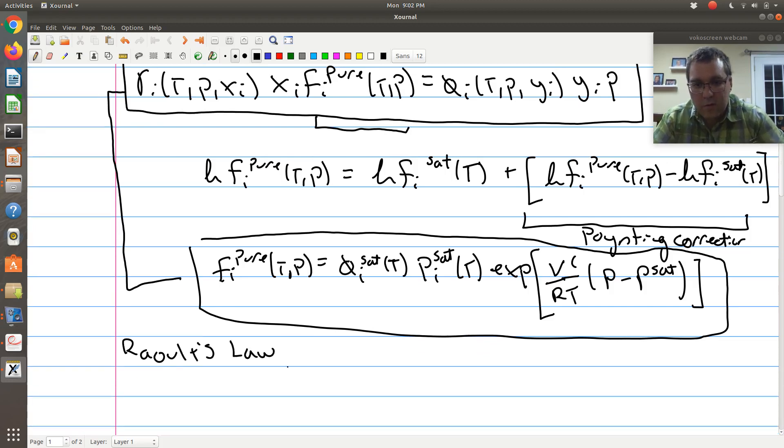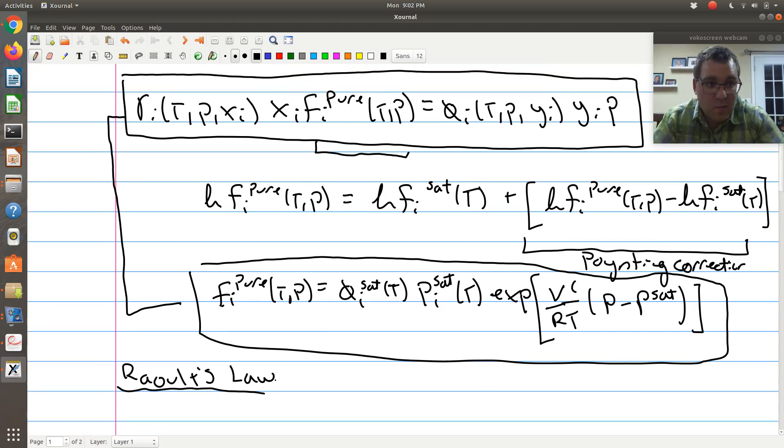So I want to revisit Raoult's Law. How we're going to derive Raoult's Law is we're going to make a series of assumptions. Looking at my rigorous gamma-phi approach, let's have at it. Assumption one, let's start easy. Let's assume that our vapor phase is an ideal gas.